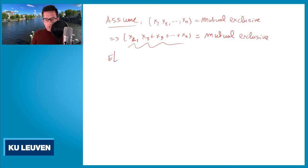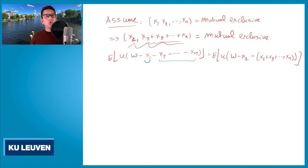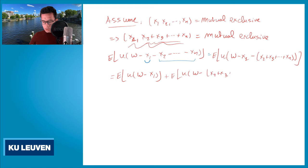I can look at the expected utility u(w - x1 - x2 - ... - xn). I can rewrite x1 minus all the rest, meaning I can write this as the expectation u(w - x1 - (x2 + x3 + ... + xn)). Because x1 and x2+...+xn is mutually exclusive, I can use the results of the previous slides and decompose this as the expected utility of the first risk, u(w-x1), plus the expected utility when you suffer the second risk x2+x3+...+xn, which is u(w - x2 - x3 - ... - xn).